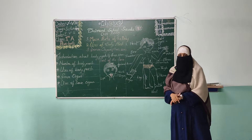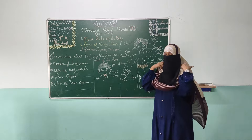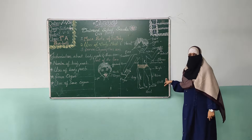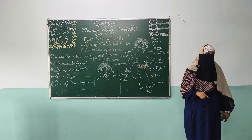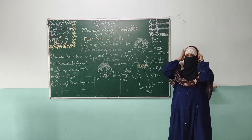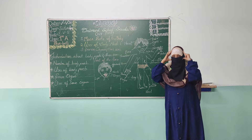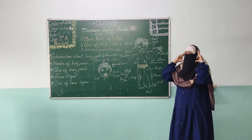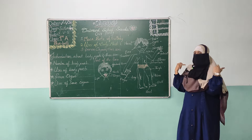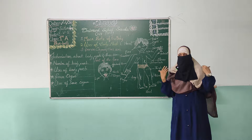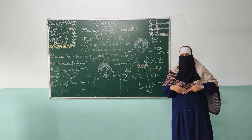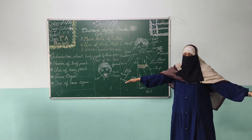Our body consists of many parts. We learn about the main parts of our body. What is the main part of our body? The main part is head. Tell me: head, neck, shoulders, chest, stomach, arms, and legs.